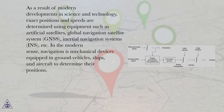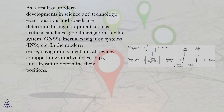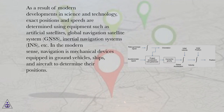As a result of modern developments in science and technology, exact positions and speeds are determined using equipment such as artificial satellites, global navigation satellite systems (GNSS), inertial navigation systems (INS), etc. In the modern sense, navigation is mechanical devices equipped in ground vehicles, ships, and aircraft to determine their positions.